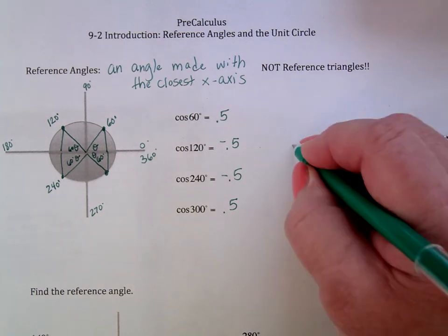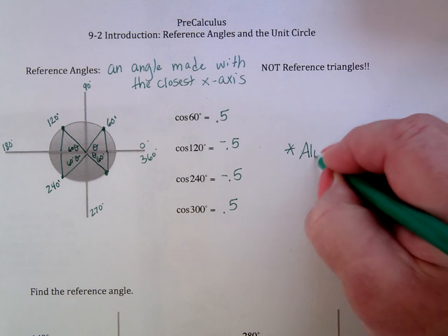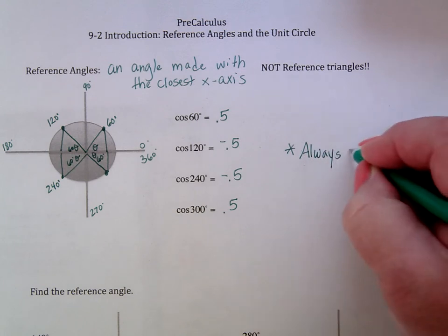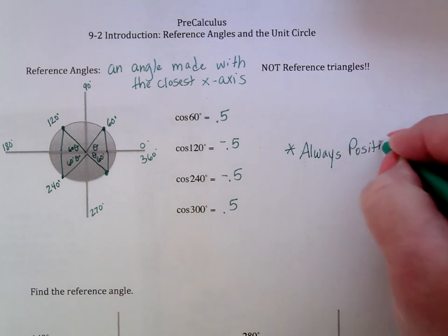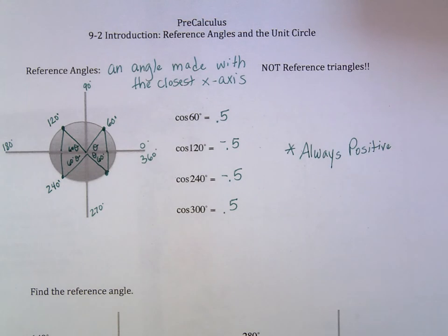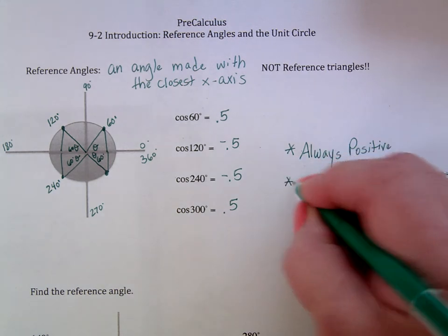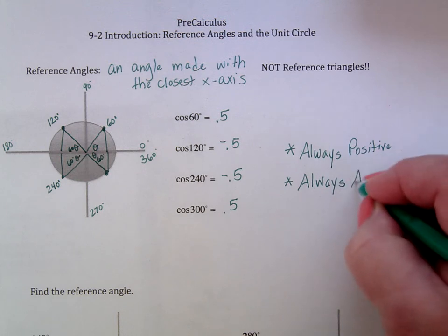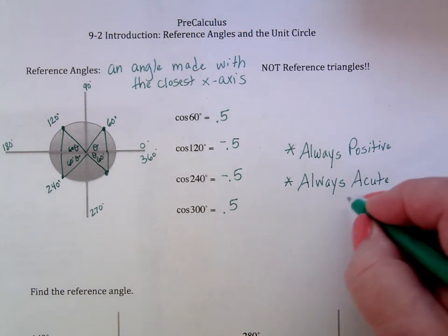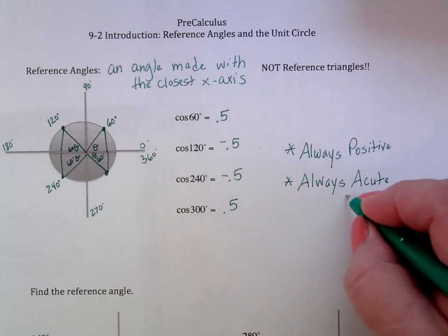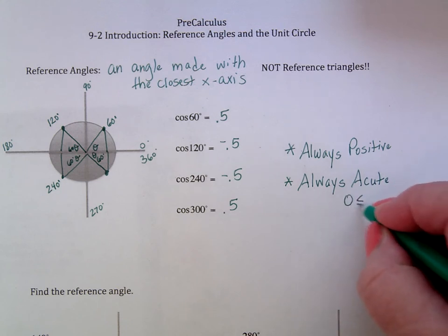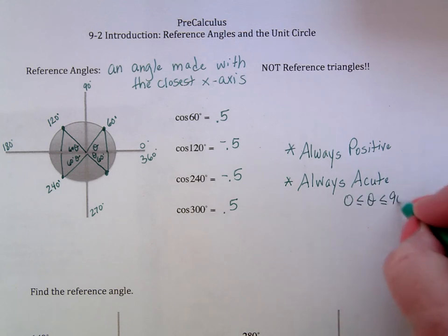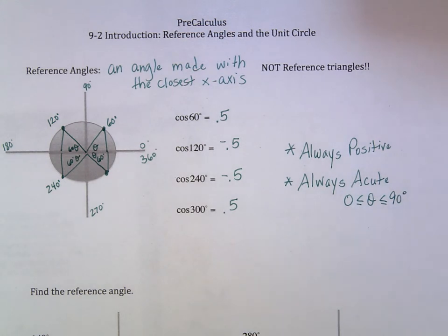A couple of things about reference angles to note: they are always positive, because it's just looking at how far from the x-axis it is. And the second thing is that they're always acute — meaning less than 90 degrees. So between 0 and 90 degrees — that's an acute angle.